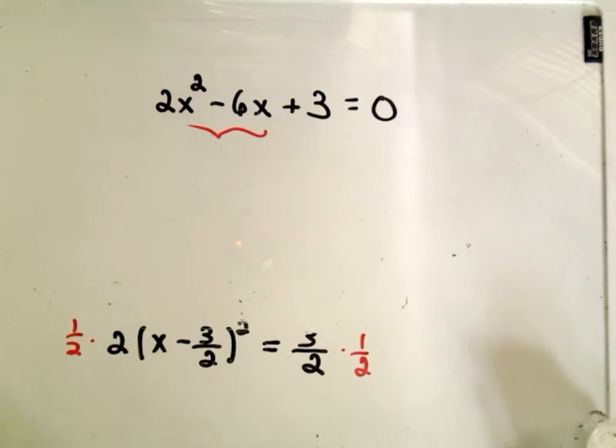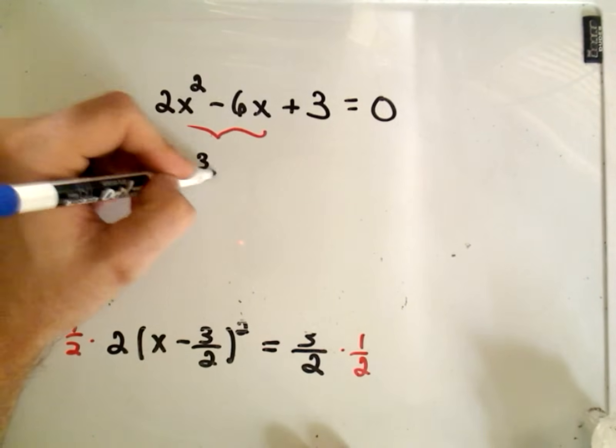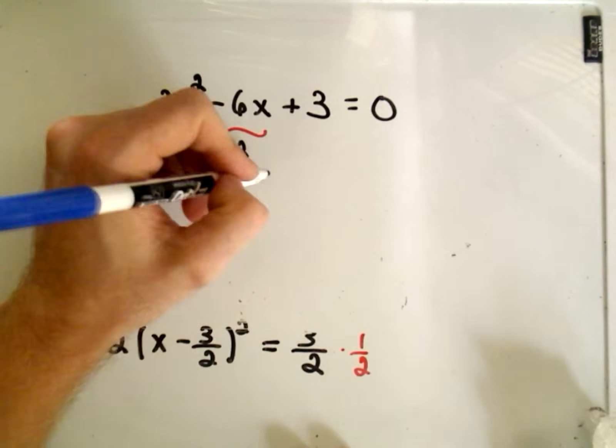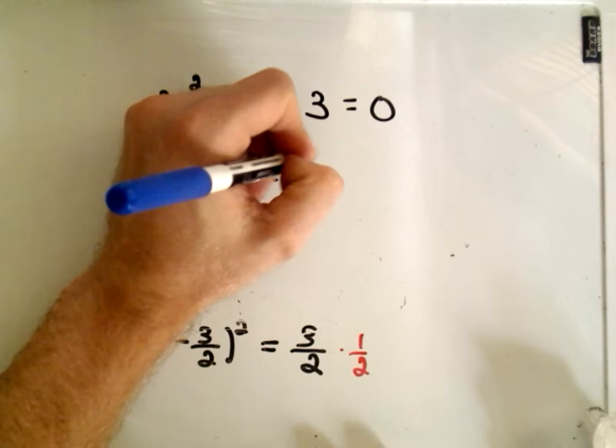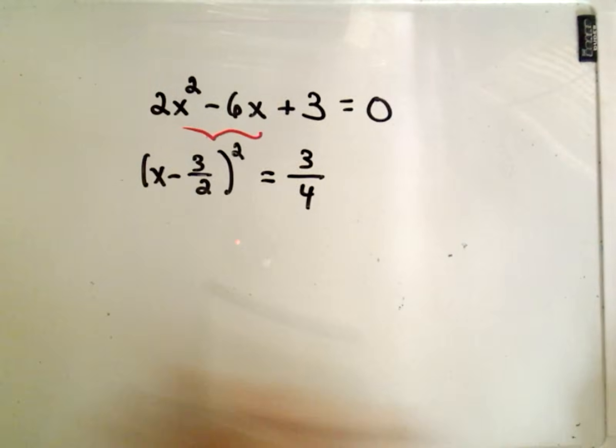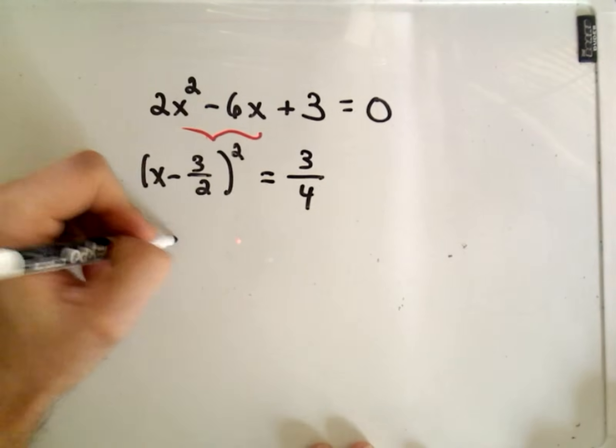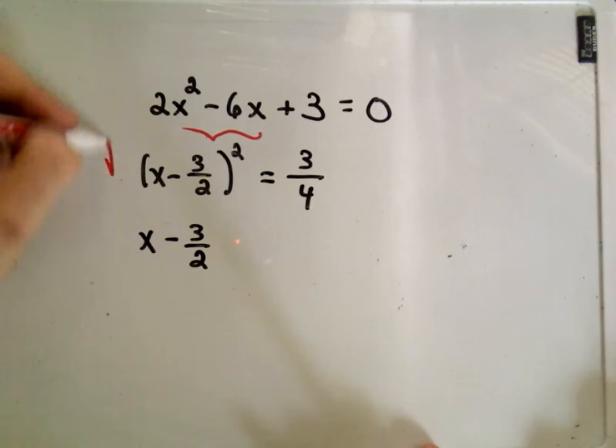So on the left side, the 1 half and the 2 will cancel out. We'll be left with x minus 3 over 2 squared. On the right side, we have 3 over 4 when we multiply. And then what we do is we take the square root of both sides. So on the left side, we'll get x minus 3 halves. I'm going to take the square root of the left, the square root of the right.